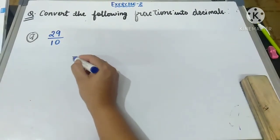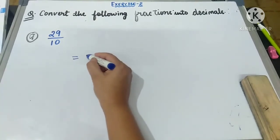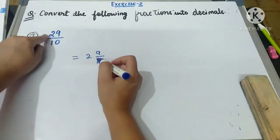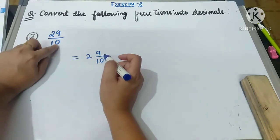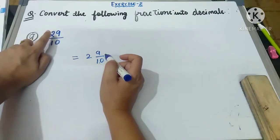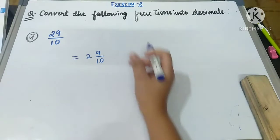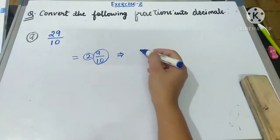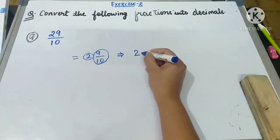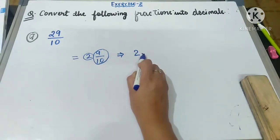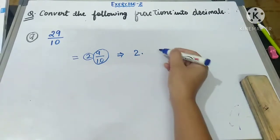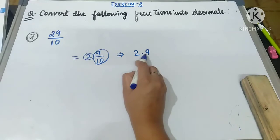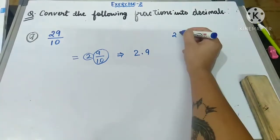For example, 29 upon 10: we can write this as a mixed fraction. Since 10 × 2 = 20 and 20 + 9 = 29, this becomes 2 and 9 upon 10. Since 2 is the whole number, we write 2, then put a decimal point. The 9 upon 10 is the fractional part — since there is only one zero in the denominator, there is one decimal place — so it becomes 2.9.